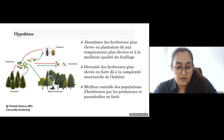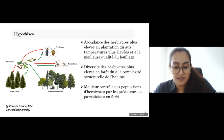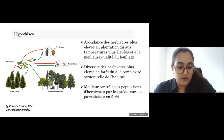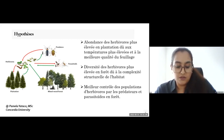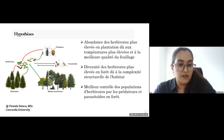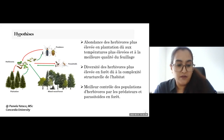Insect herbivory has profound impacts on ecosystem processes and services. Although many efforts have been made to recognize the main drivers of insect herbivory at different scales, results remain inconsistent. Most studies address mainly the effect of interaction between one plant and one insect species. We proposed three hypotheses: first, higher abundance of herbivores in plantation due to higher temperatures and better foliage quality; second, higher diversity of herbivores in the forest due to habitat structural complexity; and third, better controlled herbivore populations by forest predators and parasitoids.